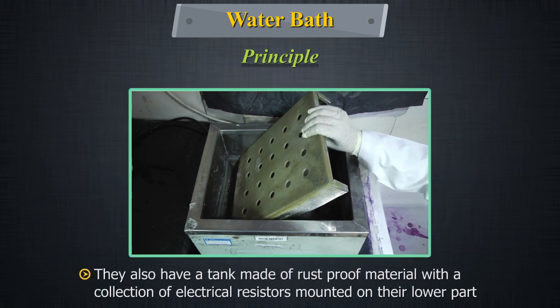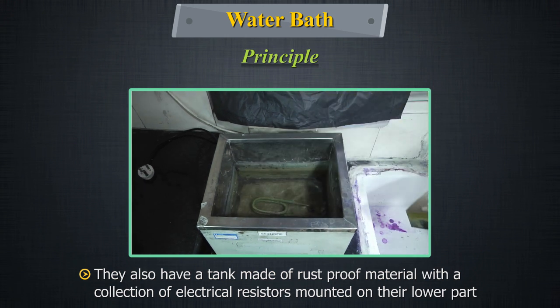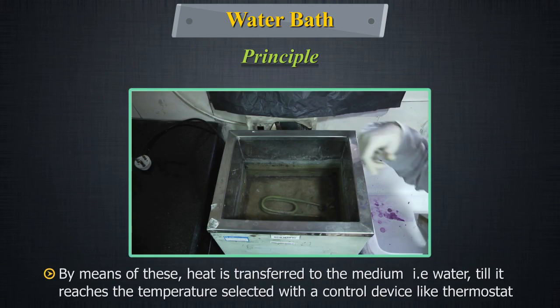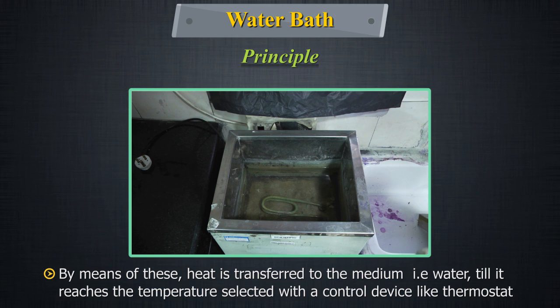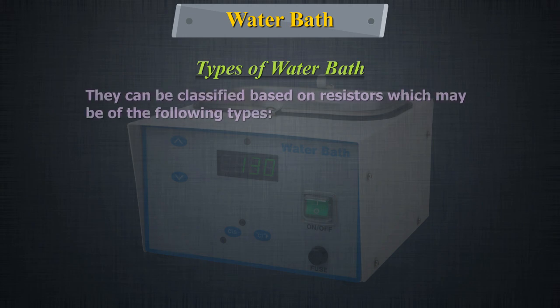They also have a tank made of rust proof material with a collection of electrical resistors mounted on their lower part. By means of these, heat is transferred to the medium which is water, till it reaches the temperature selected with a control device like a thermostat.